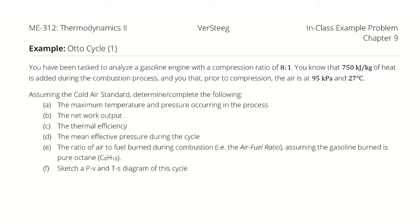You have been tasked to analyze a gasoline engine with a compression ratio of 8 to 1. You know that 750 kJ per kg of heat is added during the combustion process. And you know that prior to compression, the air is at 95 kPa and 27 degrees Celsius. Assuming the cold air standard, determine or complete the following.